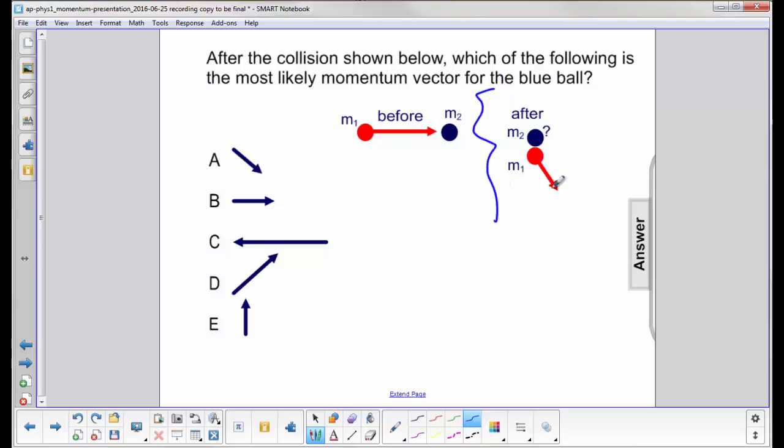So this guy has a negative momentum in the y direction, so we have to balance it out with the momentum in the positive y direction to cancel that out. Okay, so what's going on in the x direction?